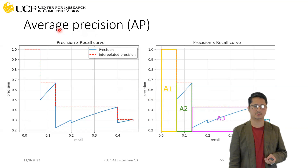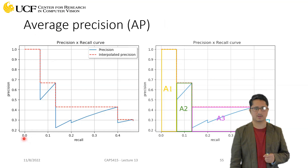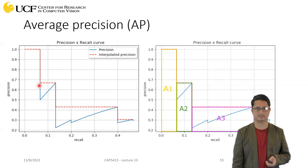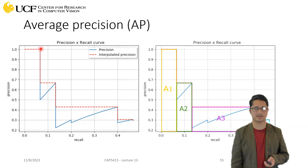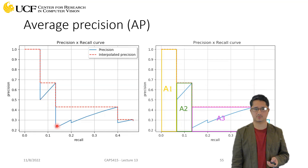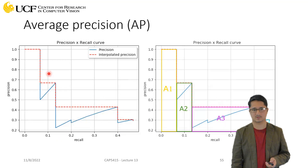This is called average precision, and you do it for one class at a time. You plot each point in a precision-recall chart — for example, precision of 1 and recall of 0.06 gives you the first point. You plot the second point, third, fourth, and so on through all ten points from the table, giving you x-y coordinates for each detection.